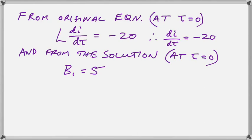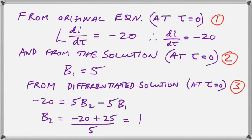So the only one now we need to find is B2, and in order to find B2, we are going to use our differentiated solution. Now notice that we have minus 20. So our differentiated solution at t equals zero is going to have to come out to minus 20.